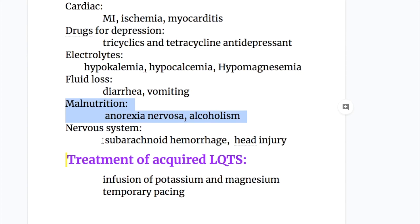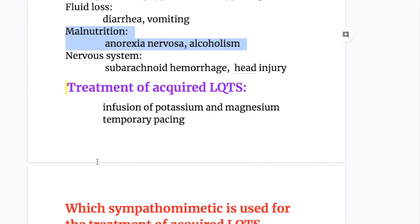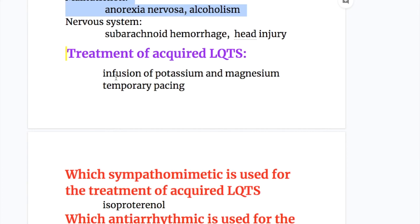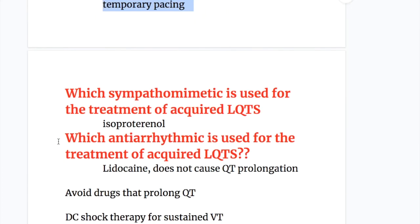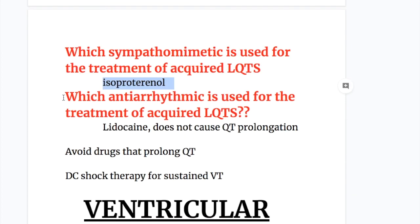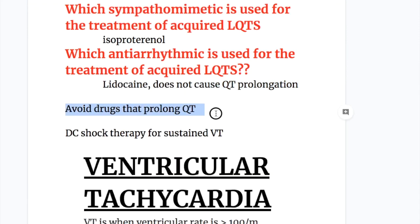Treatment of acquired LQTS: infusion of potassium and magnesium and temporary pacing. Number two: which sympathomimetic is used for the treatment of acquired LQTS? Isoproterenol. Three: which antiarrhythmic is used for the treatment of acquired LQTS? Lidocaine. Why? Because it does not cause increase in QT interval. Avoid the drugs that prolong the QT interval and DC shock therapy for sustained ventricular tachycardia.